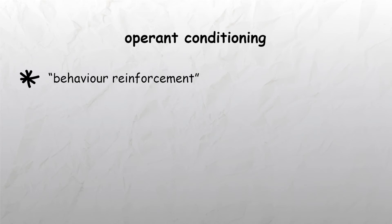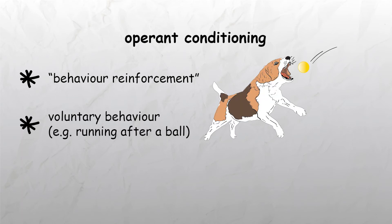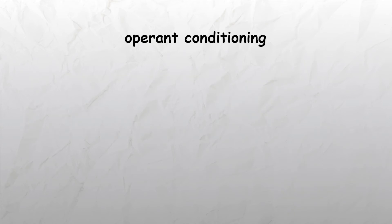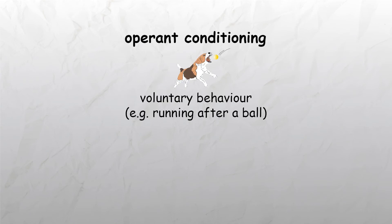Operant conditioning, on the other hand, involves a process called behavioral reinforcement, where a person or animal manifesting voluntary behavior — for example, running after a ball — is rewarded with a positive stimulus, for example being given food. This results in positive reinforcement, which increases the likelihood of that voluntary behavior occurring again.